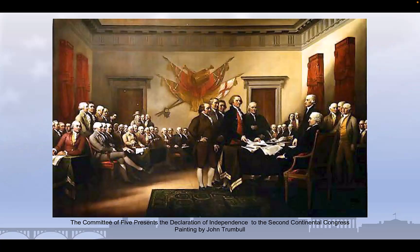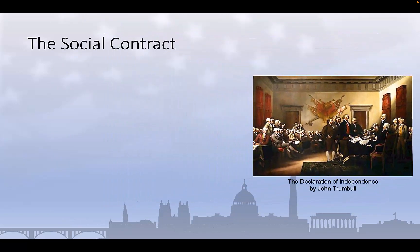Most of us are familiar, at least on some level, with the words of the Declaration of Independence. Written by Thomas Jefferson and adopted by the Second Continental Congress on July 4th, 1776, the document outlines the reason why the thirteen colonies were at war with the British crown. Some even had to memorize portions of the Declaration of Independence in elementary school. But for our purposes today, let's focus in detail on the second paragraph.